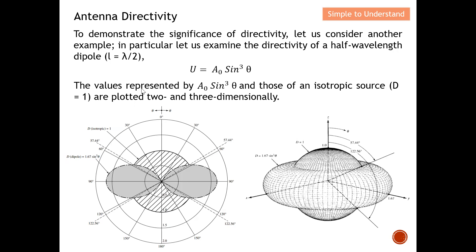From the 3D plot — imagining this as the Earth — the isotropic source is the inner sphere and sin³θ extends further outward. From this we conclude that sin³θ has a much better antenna directivity compared to both sin²θ and sinθ. In summary: sin³θ has the best directivity, followed by sin²θ, then sinθ.